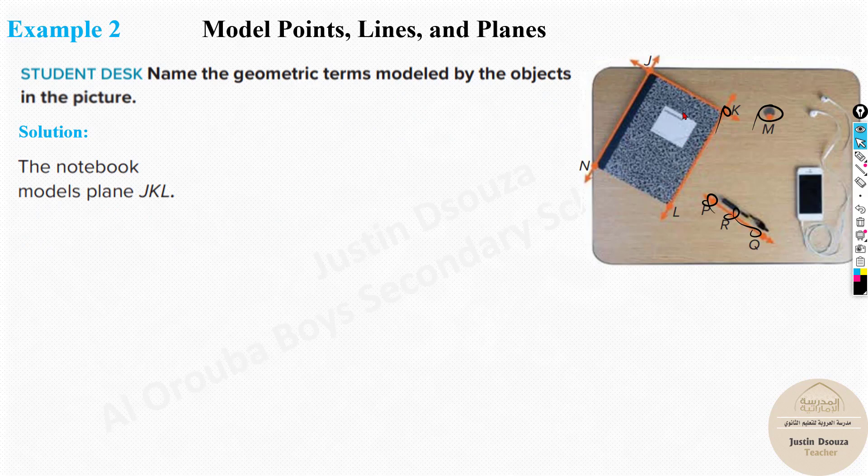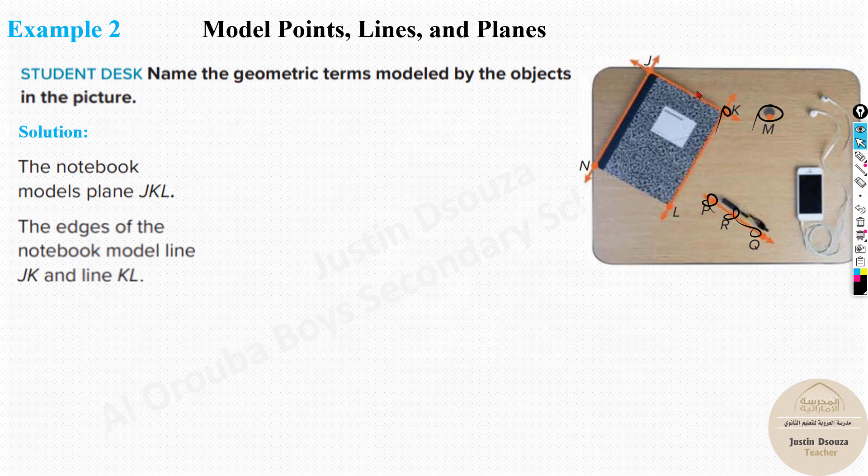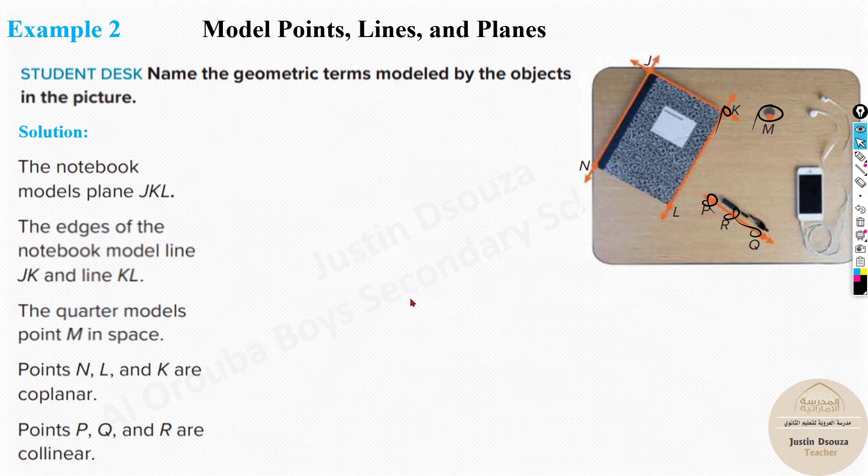The object notebook models are plane. Yes, absolutely. JKL is denoted by the edge of the notebook. All the edges are lines. Yes, JK is a line, LK is line. And the quarter, over here you can see this is a quarter. That's a coin. It is a point. M is a point. Now you can see the point N, L, K are coplanar. Why? Because they are all in the same plane. Absolutely. You can't tell point M. It's coplanar. No, it's away. And lastly PQRS or PRQ is collinear because they are all in the same line. This is how we can solve it up.